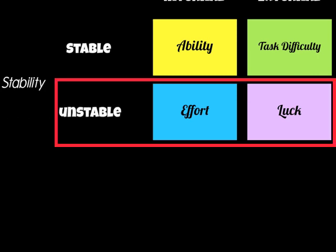On the bottom strand you have unstable factors. These are things that can be changed a little bit more easily, or are unreliable — one week they could be this, another week they could be something else. For example, your own effort is an internal unstable factor because you can change it: you can put in more effort next time, or you might not put in as much. Luck is similarly unstable — one week you might hit the post three times, and the next week those three shots might go in.